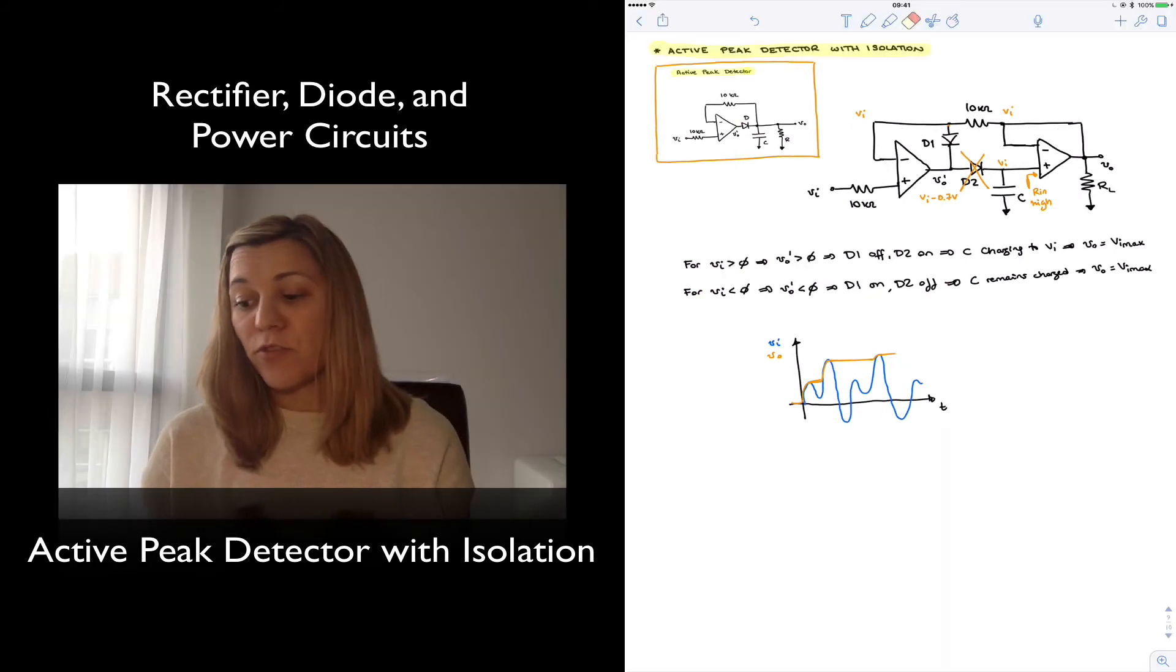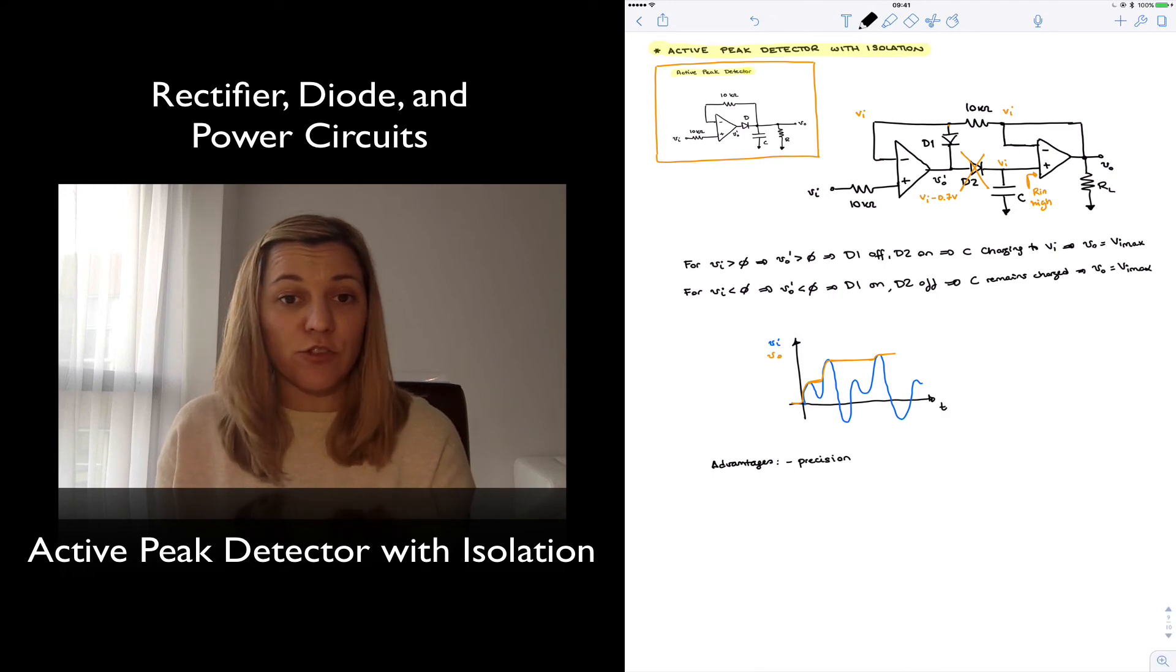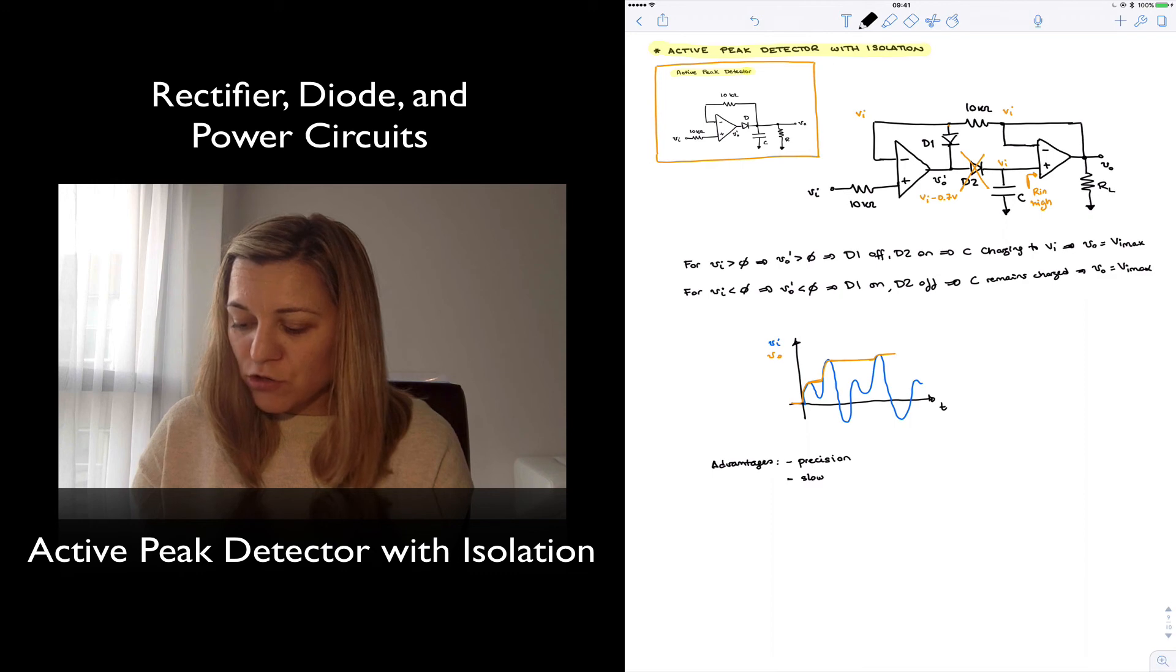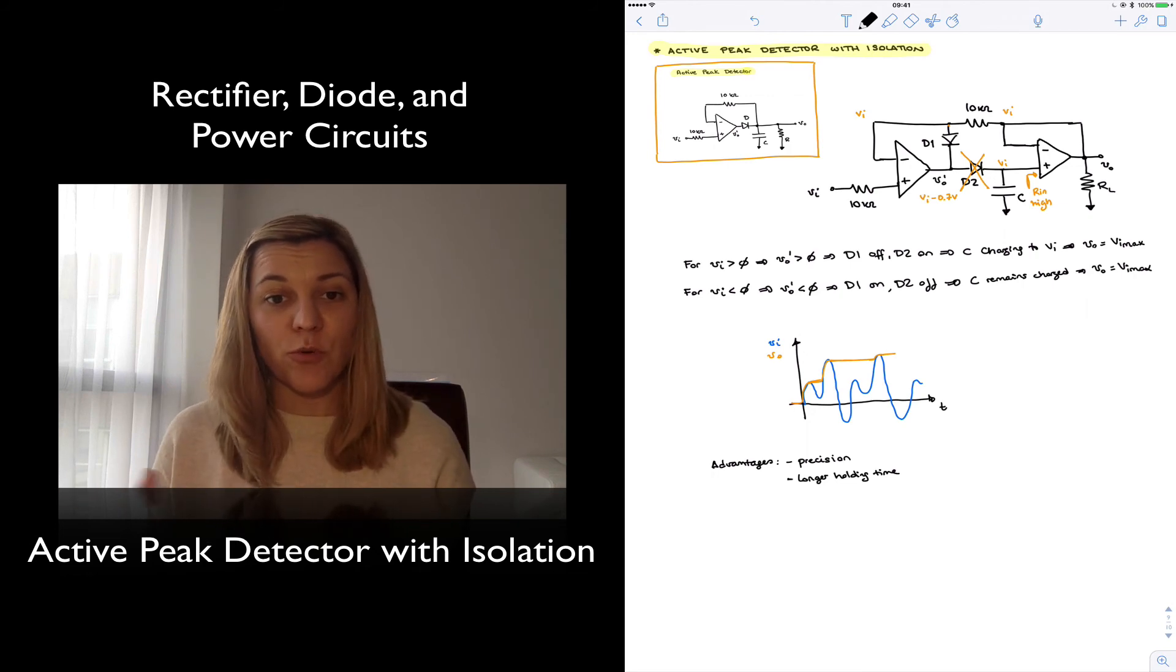We can point to some of the advantages of this circuit with respect to previous versions of a peak detector. And of course one of the main advantages is that it still has the precision characteristic of the active version of the peak detector circuit because it has that op-amp compensating for those diode drops. It has a slower discharge and therefore perhaps I should say longer holding time for your input value because again it cannot discharge so easily once the capacitor is charged to the peak value.